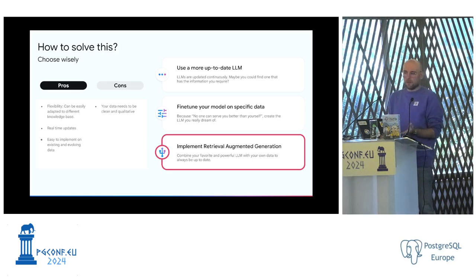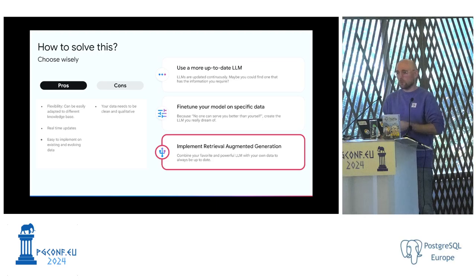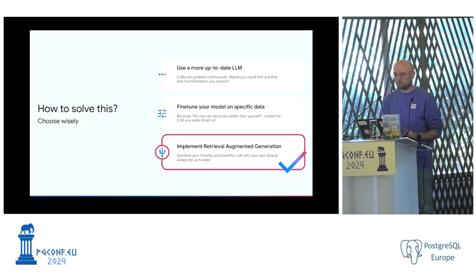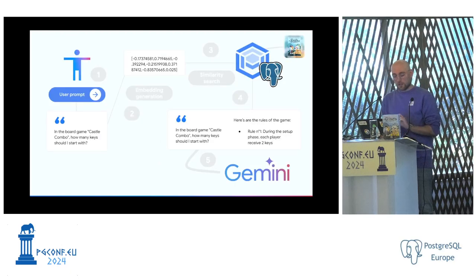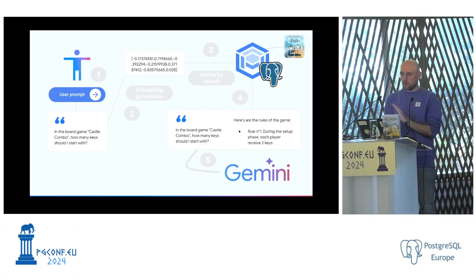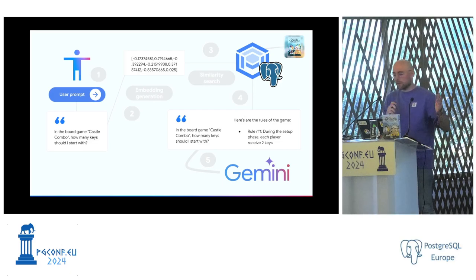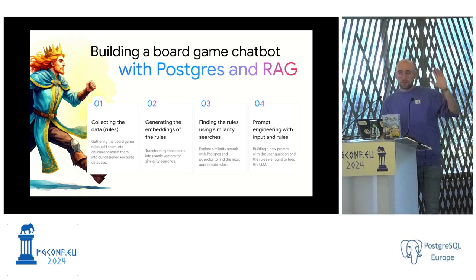The one con is that your data needs to be high quality, because Gemini needs it to understand and complete the answer. We're going to build this in the next 30 minutes. Looking at the big picture of the RAG chain, it's a four-step plan: collecting the data and inserting rules into Postgres, generating embeddings, doing similarity search, and finally prompt engineering.